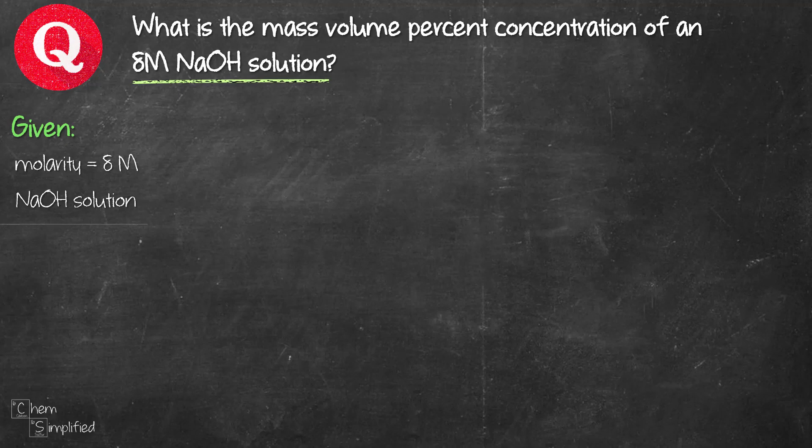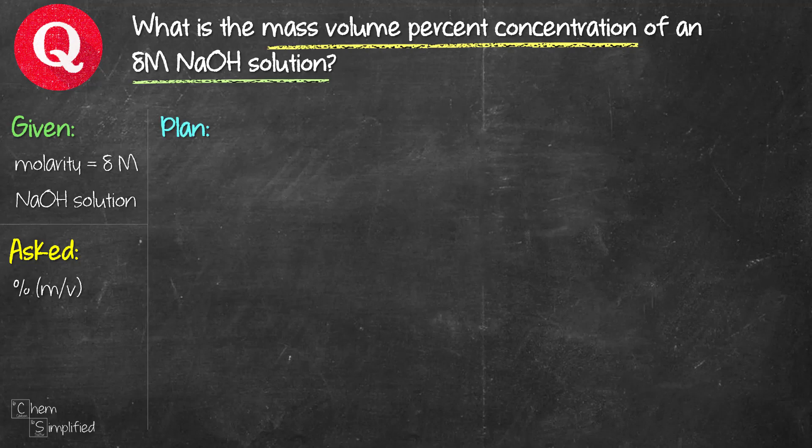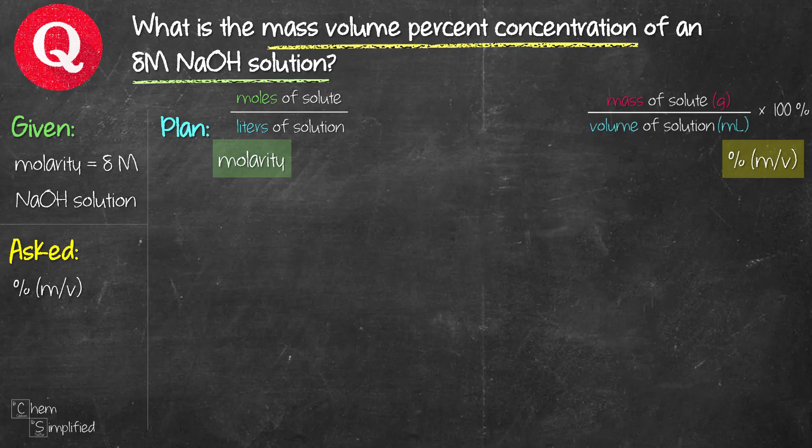The question clearly states that it wants us to figure out what is the mass volume percent concentration, so that means percent mass volume. Let's figure out a plan before we jump straight into solving it. It's always good to have a plan. We have molarity and we need to find percent mass over volume. Now let's figure out how to bridge this gap.